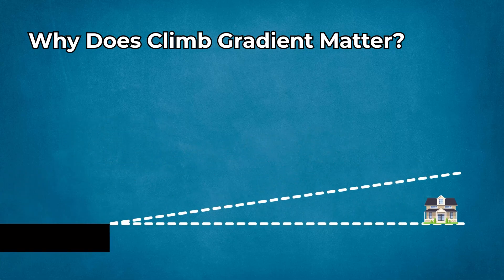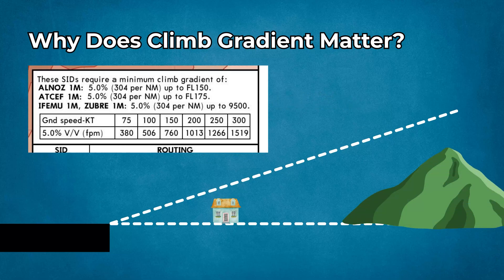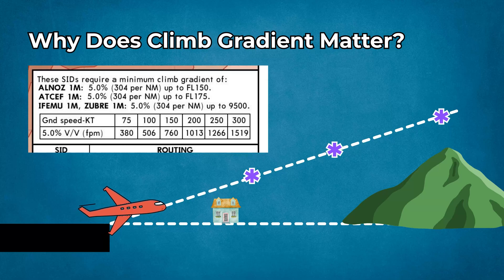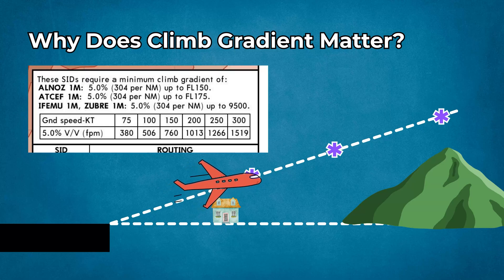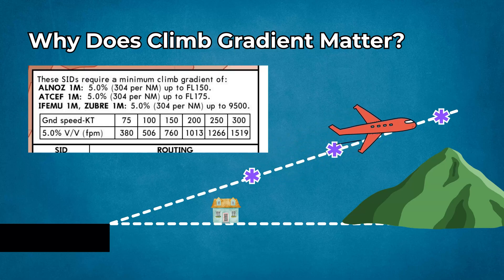However, standard instrument departures and obstacle departure procedures sometimes require higher gradients — up to 500 feet per nautical mile or more — due to terrain, obstacles, or ATC constraints. These steeper climb requirements must be adhered to by the pilot or approved for procedure design. If pilots cannot meet the required climb performance, they risk inadequate terrain or obstacle clearance, non-compliance with ATC or regulations, or inability to safely fly a departure procedure.